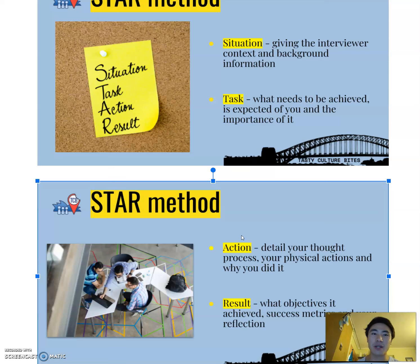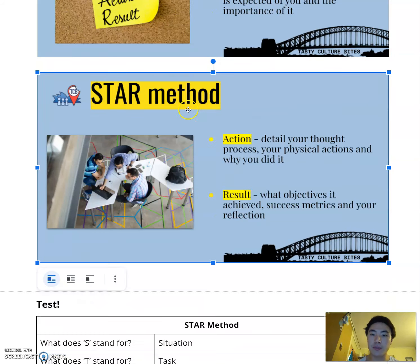So for example, if your interviewer asks you, 'Tell me about a time that you successfully resolved a conflict,' you could use the STAR method to outline: What was the S? What was the situation — what was the background of the conflict that you were resolving? T, task — what needed to be achieved and what was the importance of it? A, action — what action did you actually take? And R — what was the result? What did it achieve? The STAR method is a very effective framework for you to answer interview questions.